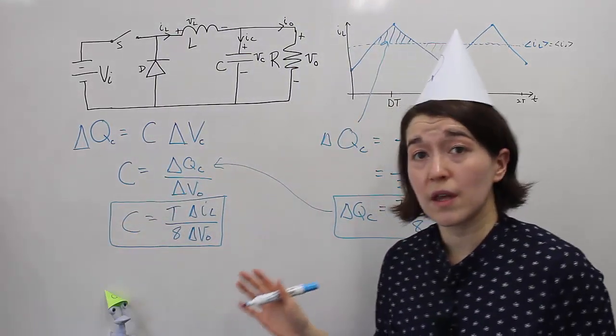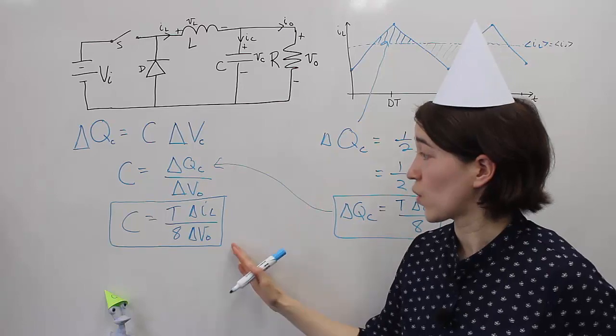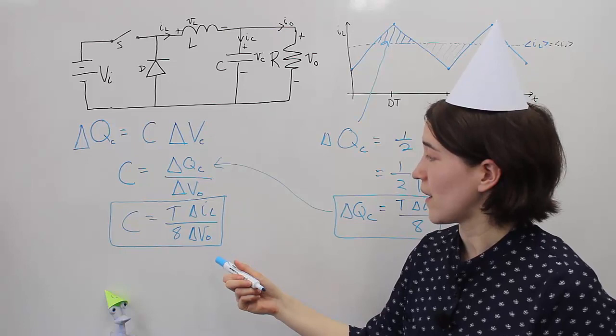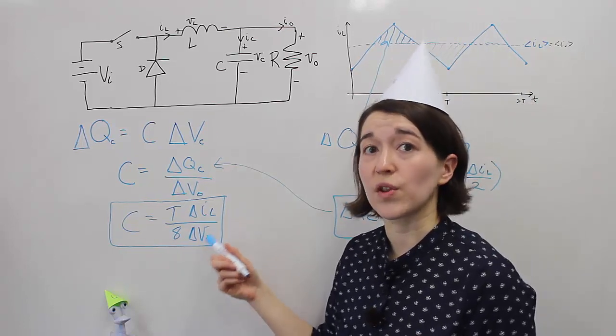So using this equation, you can calculate the capacitance that's required based on the expected voltage ripple, or the requirement, and the inductor current ripple.